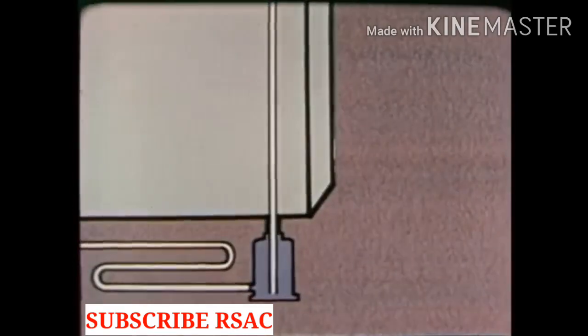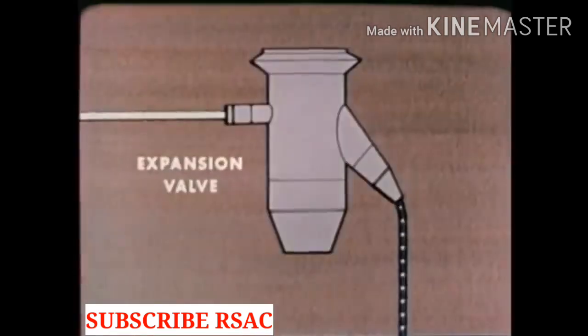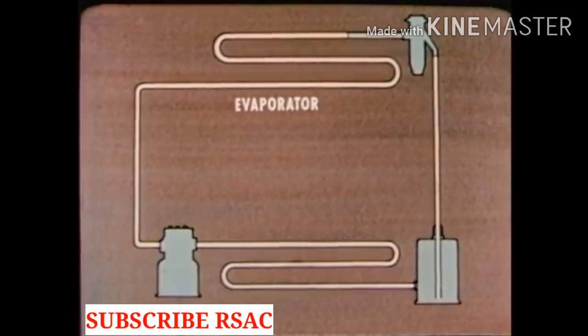Now let's see how a refrigerator works. We'll begin at the receiver where the excess refrigerant is stored. It is in the liquid state and under high pressure. The high pressure forces the refrigerant through the liquid line to the expansion valve. This valve causes a pressure drop. The high pressure liquid becomes a low pressure liquid. This is like letting air slowly out of a balloon. The air in the balloon is still under high pressure but the air that gets through expands and its pressure drops. In the same way refrigerant that passes through the expansion valve expands and its pressure drops. The low pressure refrigerant flows into the evaporator.